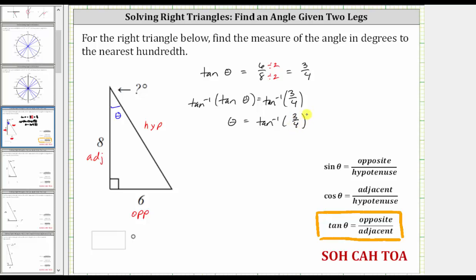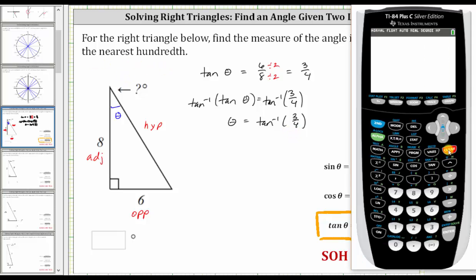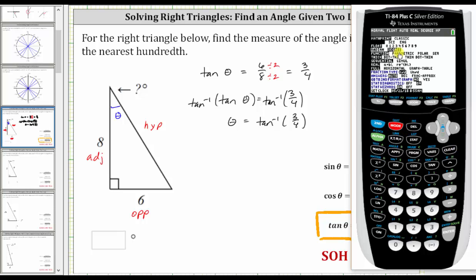Now we'll need to go to the calculator and get a decimal approximation for angle theta in degrees to the nearest hundredth. The first step is to make sure the calculator is in degree mode by pressing the mode key, and notice how here degree is highlighted. If degree was not highlighted, we would use the arrows to go down to degree and press enter. Now we go back to the home screen by pressing second mode for quit.